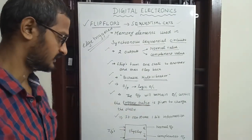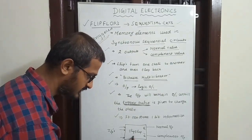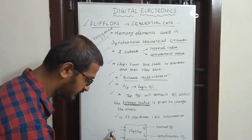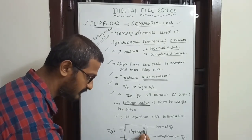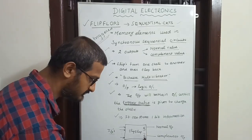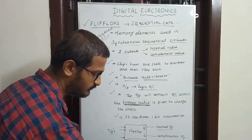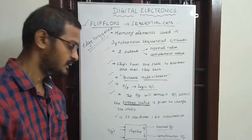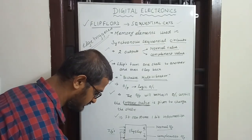A flip-flop is a one-bit storage device. Looking at the flip-flop structure, the inputs go in and the outputs are Q and Q-bar. Q is the normal output and Q-bar is the complementary output. A clock signal is provided to the flip-flop.